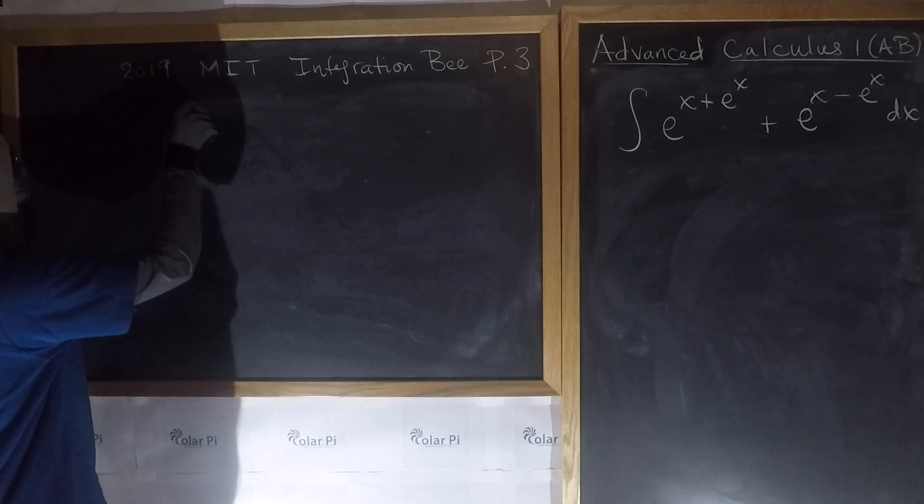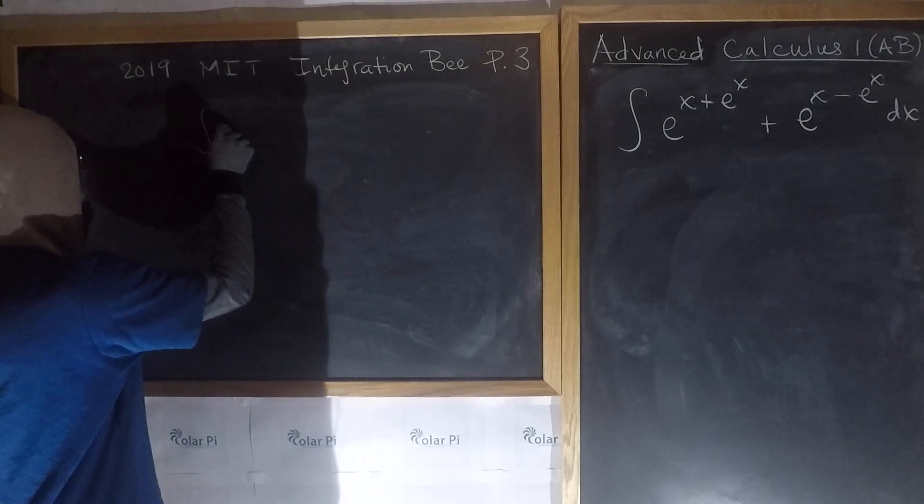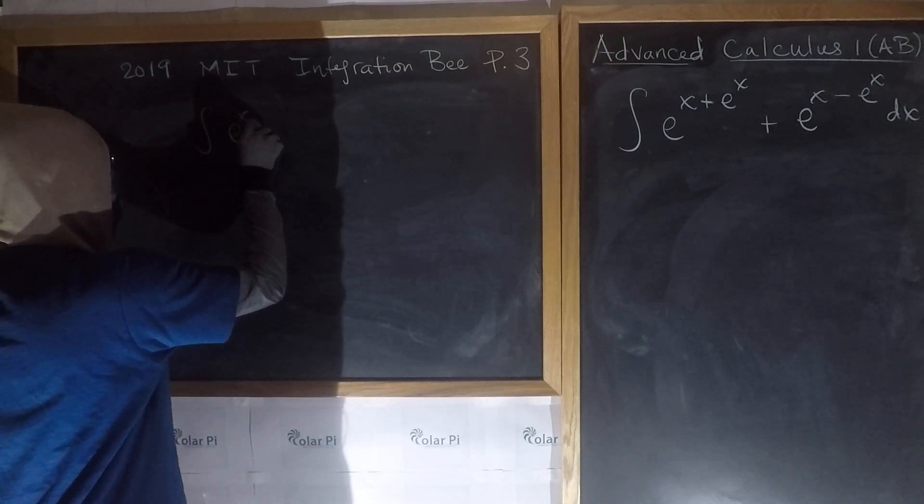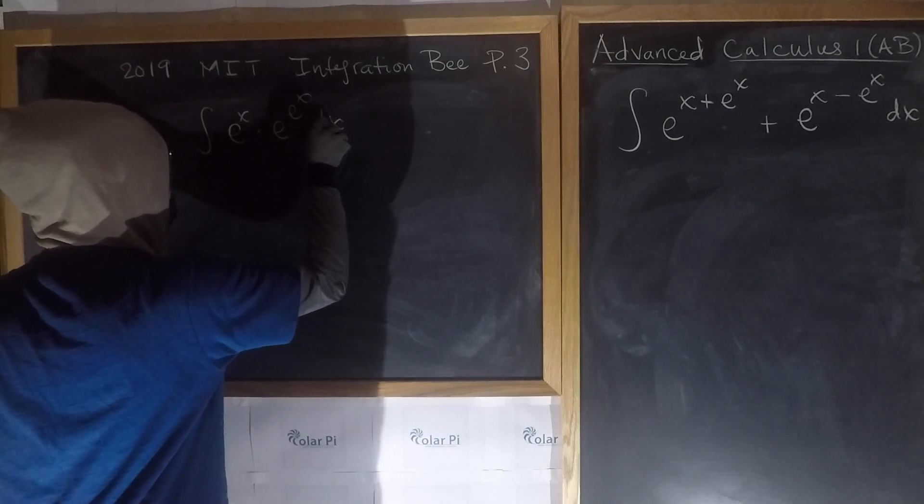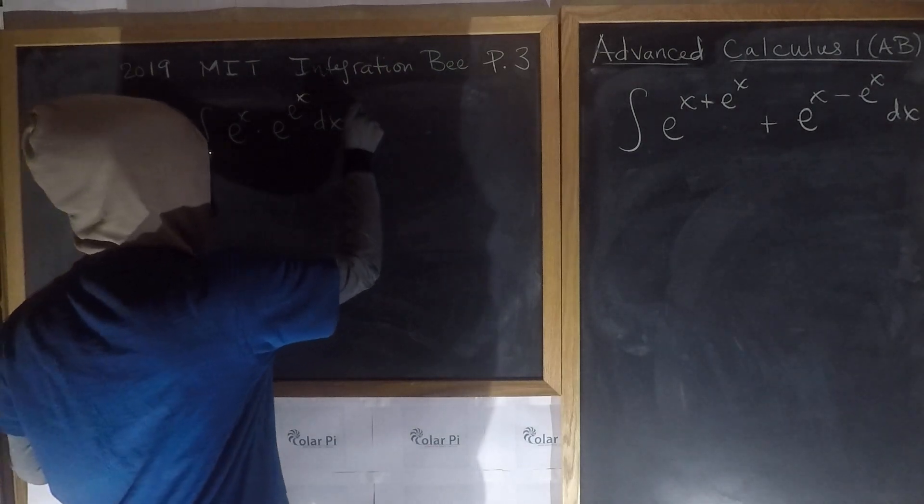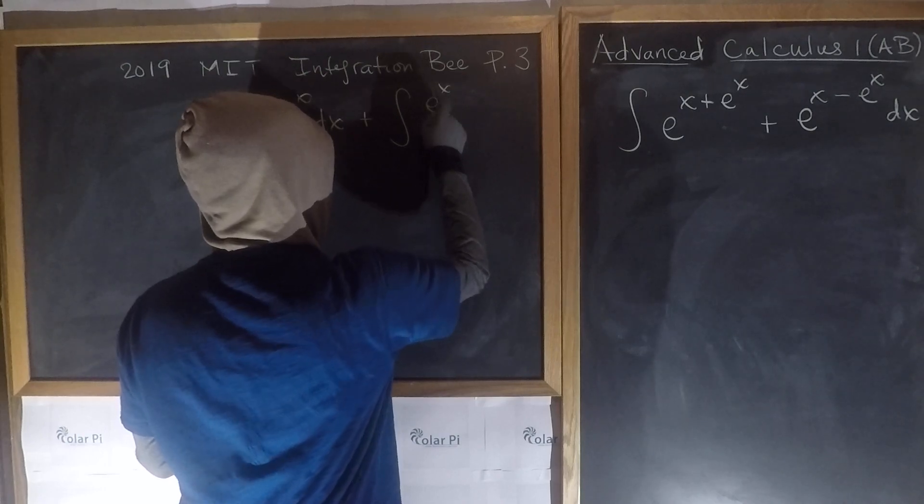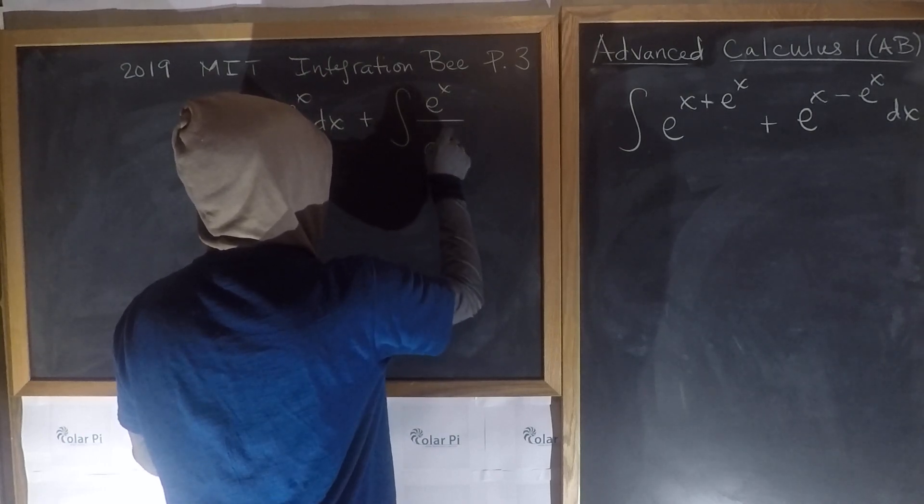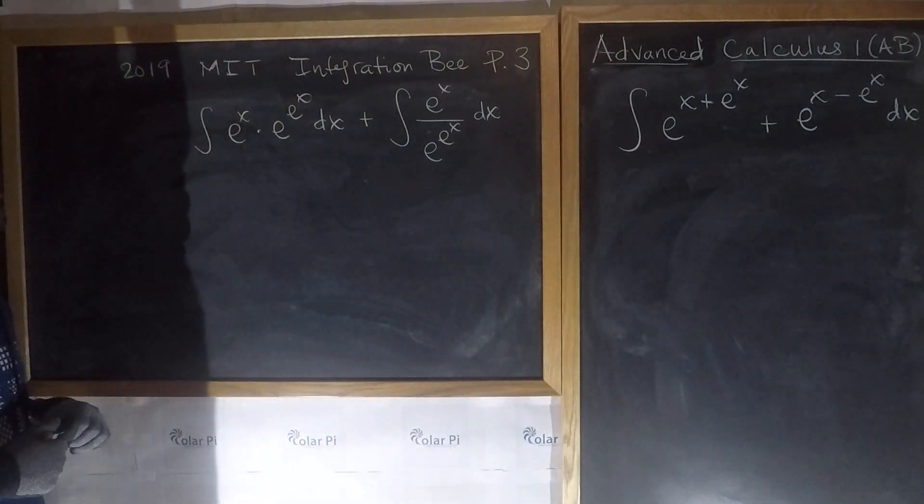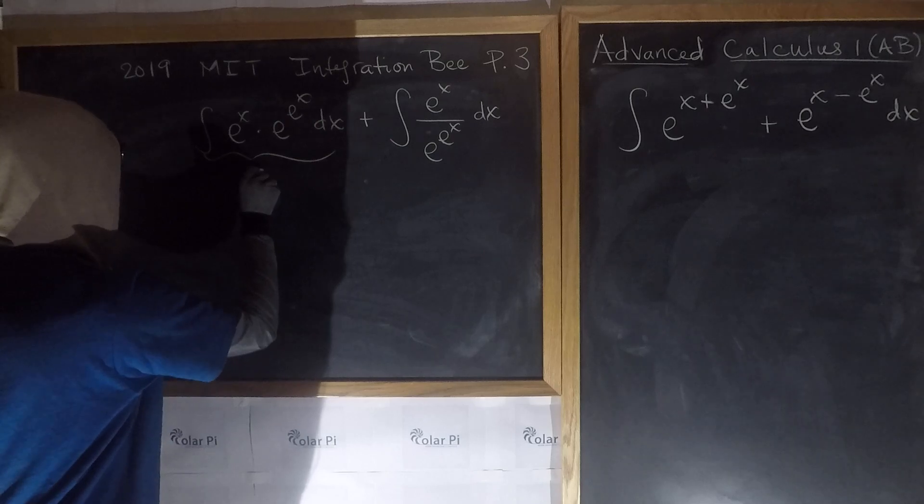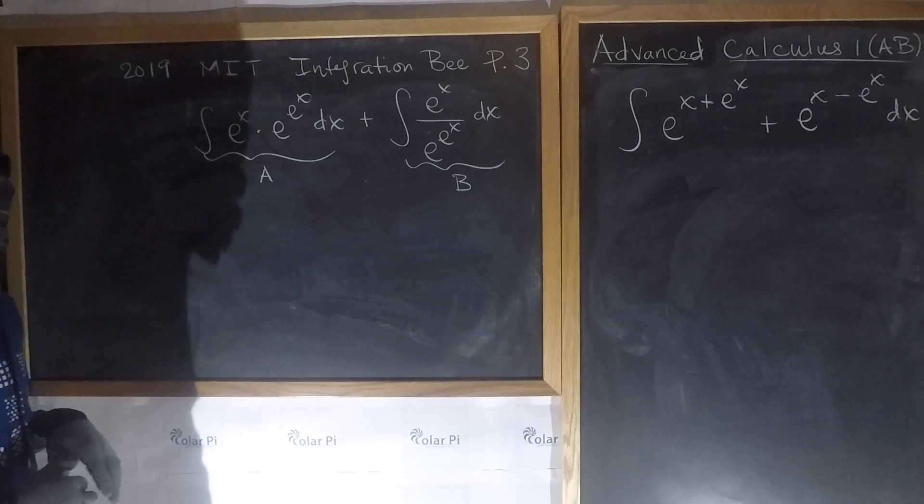then we can rewrite the integral to read like this, which is using exponent rules here in the first part. We could write e to the x times e to the e to the x times dx, right? And then plus the second integral can be written as e to the x divided by e to the e to the x times dx. And let's call this first integral A and this second integral B, and once we find them, we could add the results.